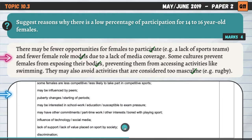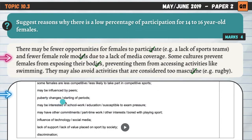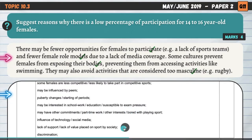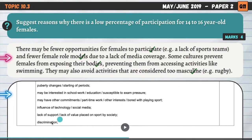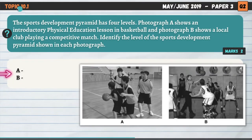Lots of other things we could have gone for: being influenced by peers, puberty changes such as the start of periods, interest in schoolwork or exam pressure, and discrimination at the bottom of the mark scheme. Pause the video to compare your answers, and we'll move on to the next question on topic 10.1 — the sports development pyramid again.